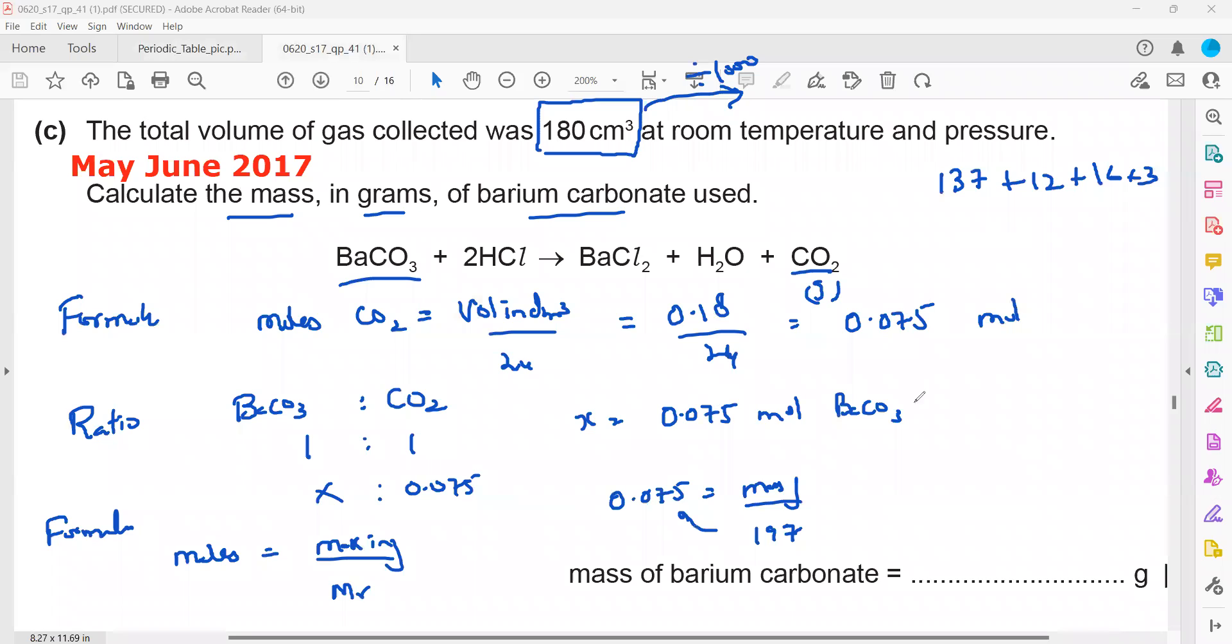197 is divided, the other side will be multiplied. So 0.075 into 197, what's the answer? 0.075 into 197 equals 14.77 grams, or 14.78.